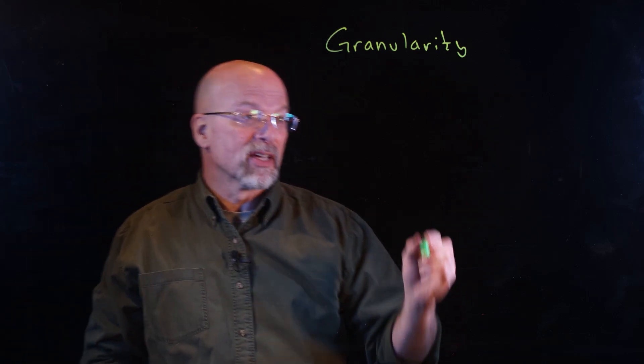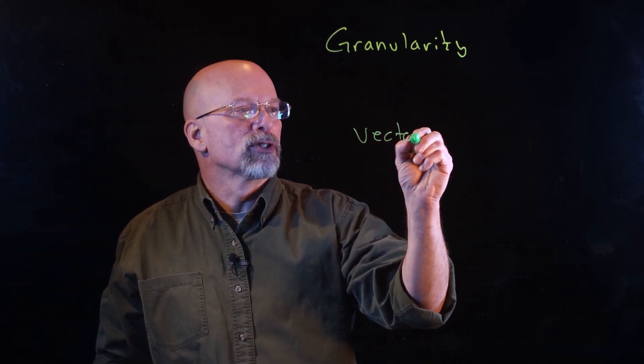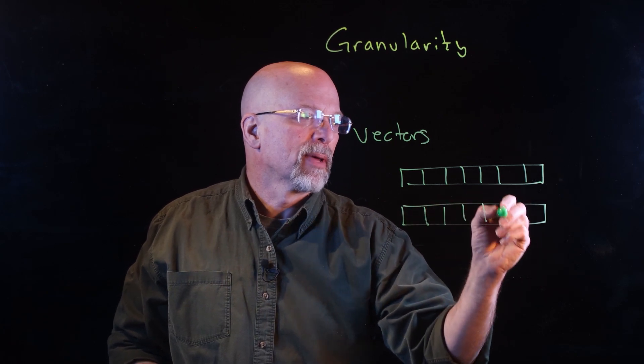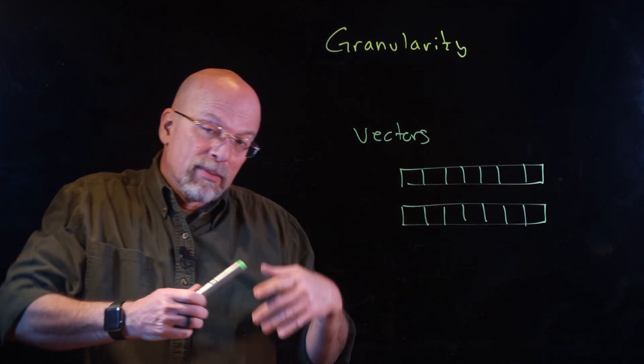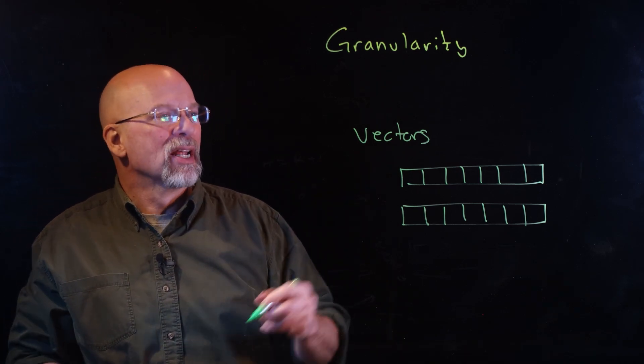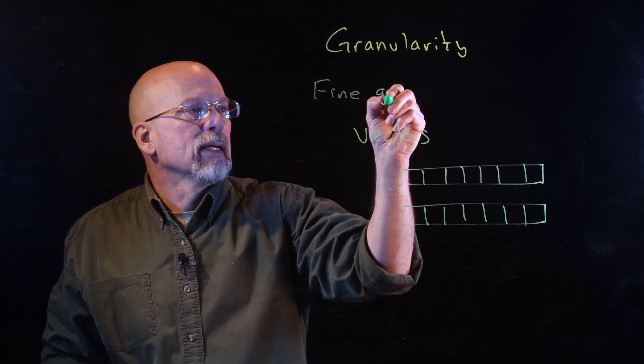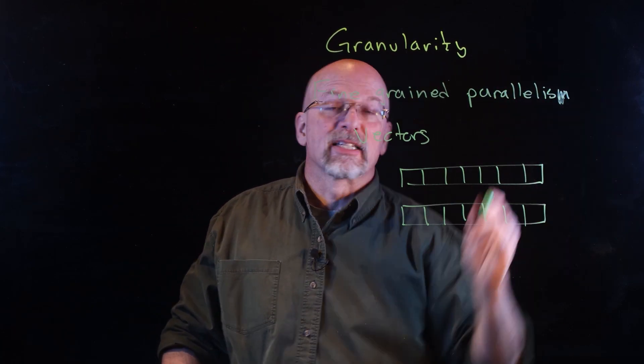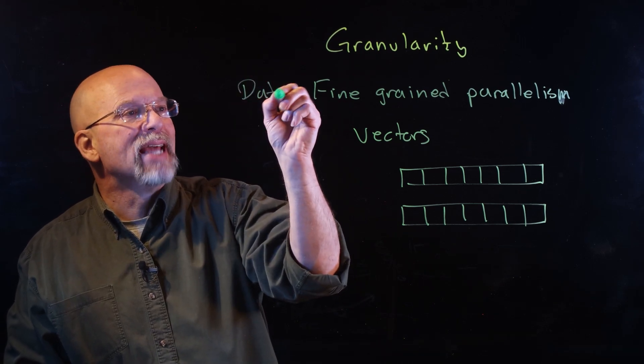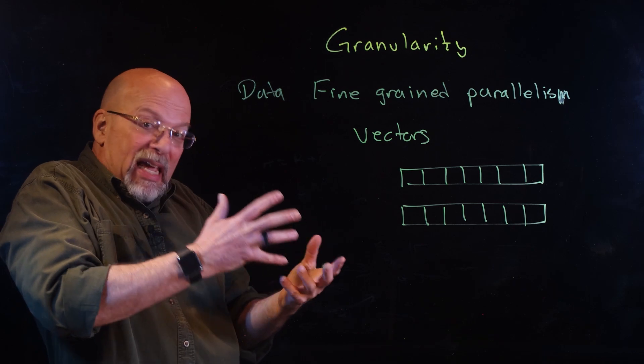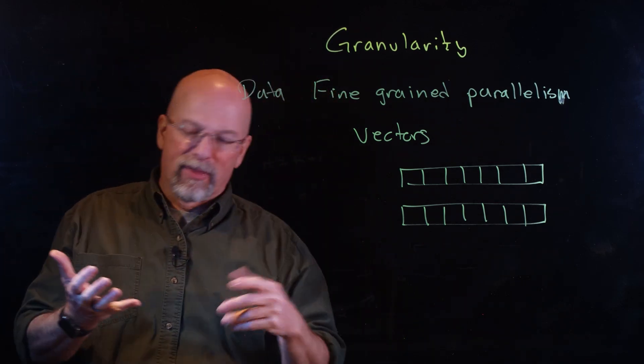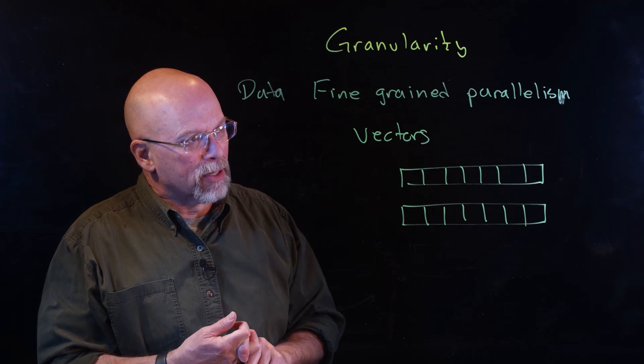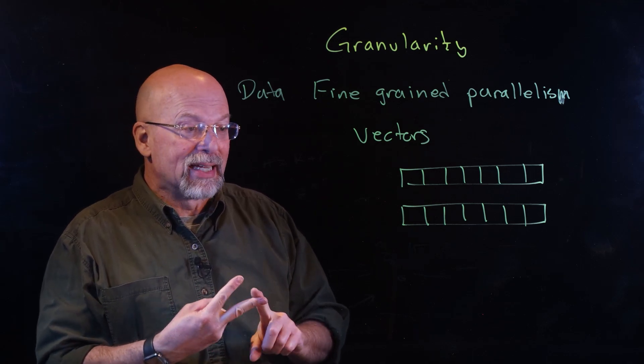We talked about this in the previous lesson, where if I have vectors, I've got this idea of multiple elements in a vector being combined with multiple elements from another vector. Could be addition, could be some sort of a higher-level mathematical operation. What we've got now is fine-grained parallelism, except this time what we're talking about is data. The data itself is being operated on at a very low level. You're talking about things like real-time graphics, any sort of audio processing, any sort of vector arithmetic that you might be doing.